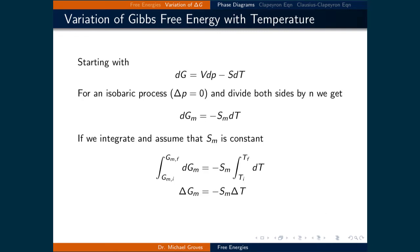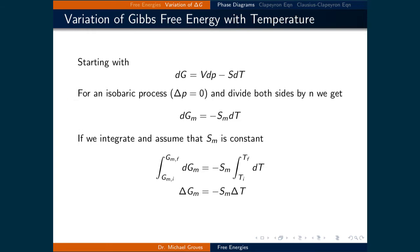Now let's look at when we vary the temperature. Assuming isobaric processes means the change in pressure equals zero, so the first term on the right-hand side cancels. Dividing through by the number of moles, the infinitesimal change in molar Gibbs free energy equals the negative of the molar entropy times the infinitesimal change in temperature. Assuming molar entropy is constant, the change in molar Gibbs free energy equals negative molar entropy times the change in temperature.